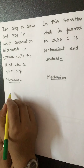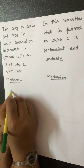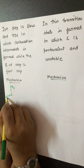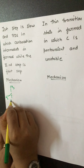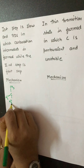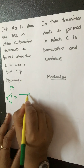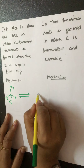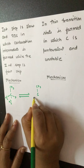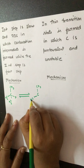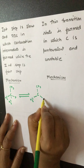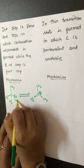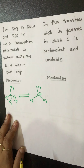Let's look at the short mechanism. For SN1 type of mechanism, the substrate gives out a carbocation intermediate by the breaking of the C–X bond.